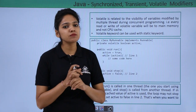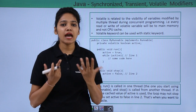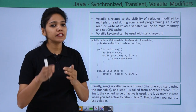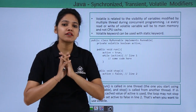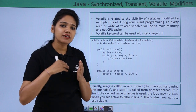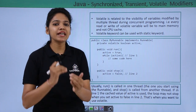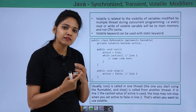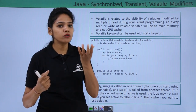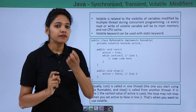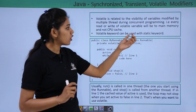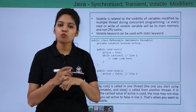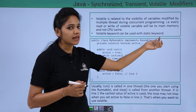The next type of non-access modifier is volatile. Volatile is related to the visibility of variables when a number of threads are running concurrently. When number of tasks are running concurrently, they will keep reading and writing the value of a variable. The value of this variable will be stored in your main memory and not in your CPU cache. Another important thing: volatile cannot use the static keyword.